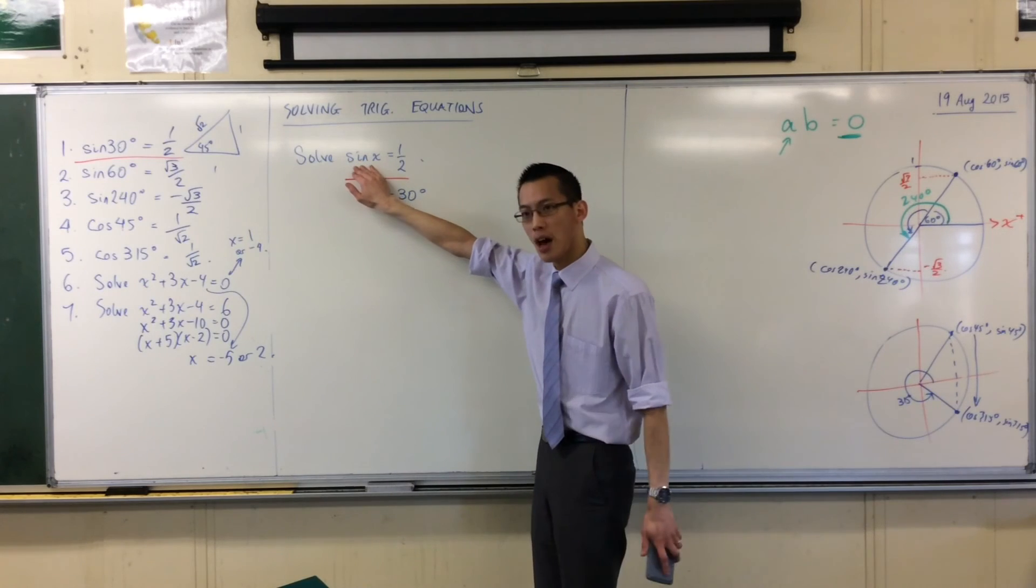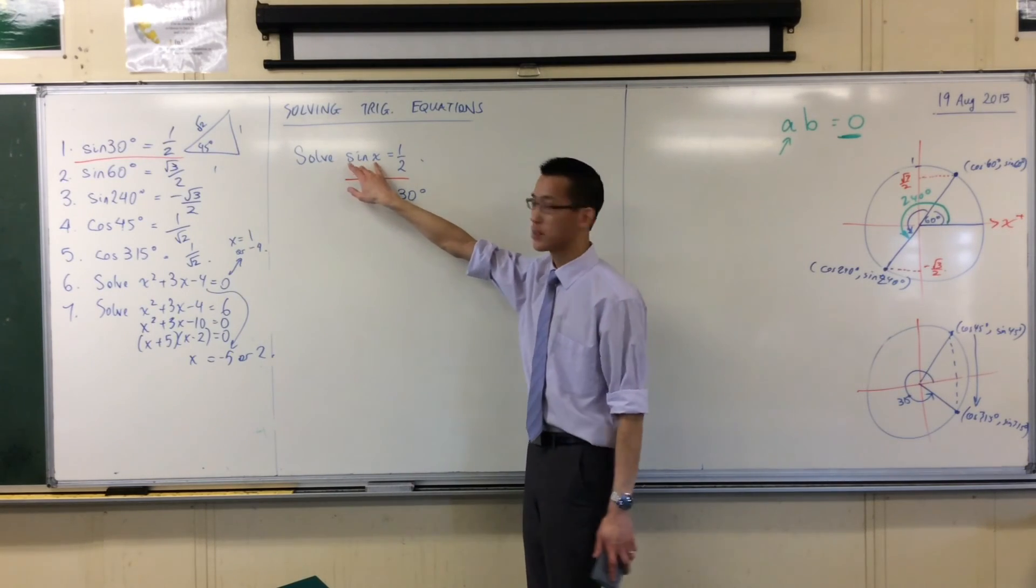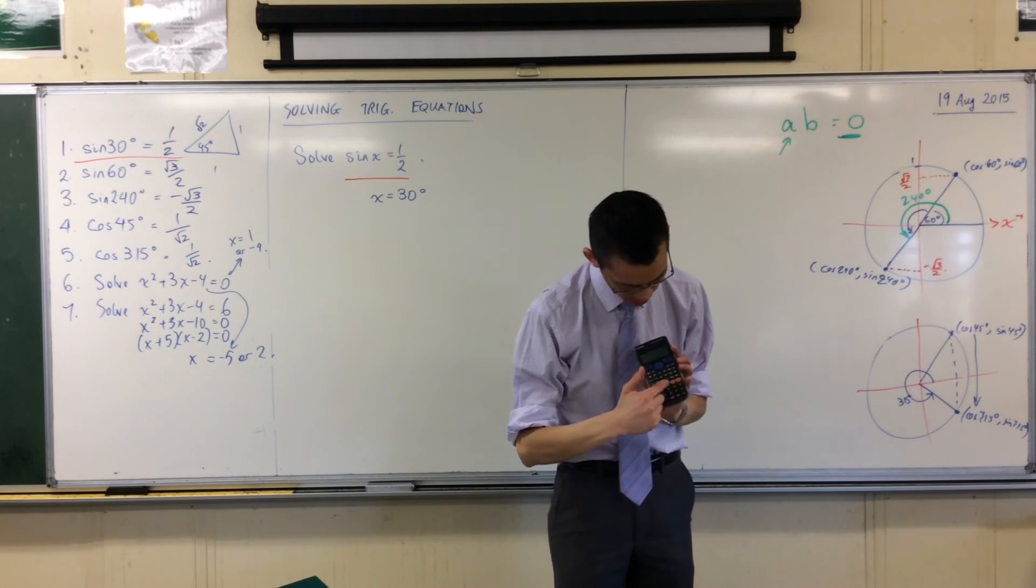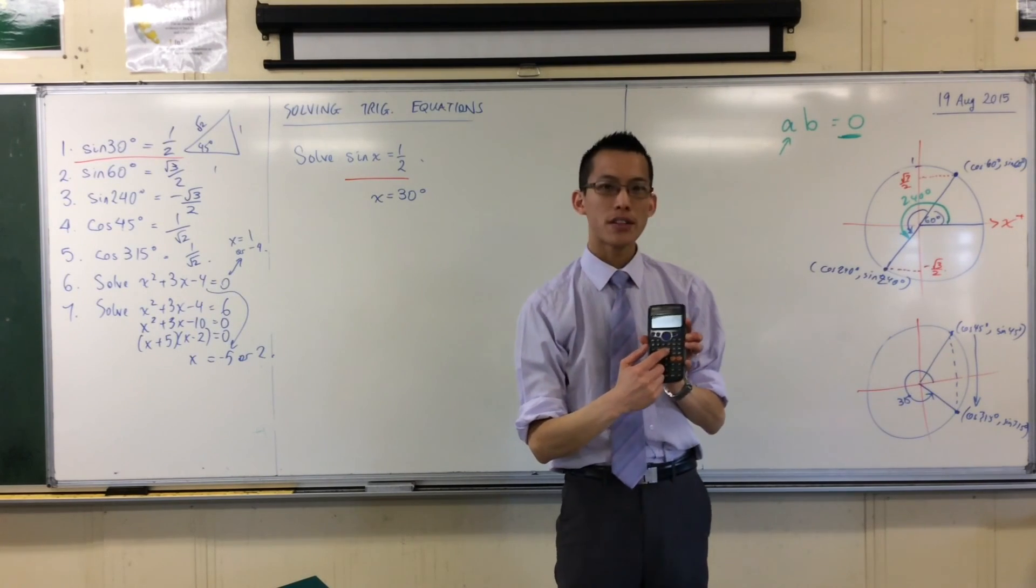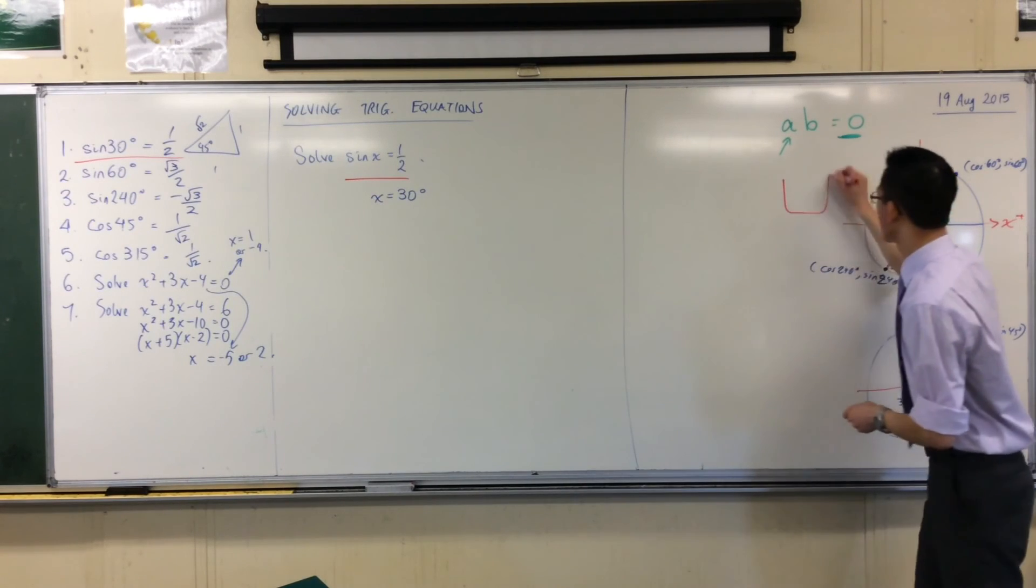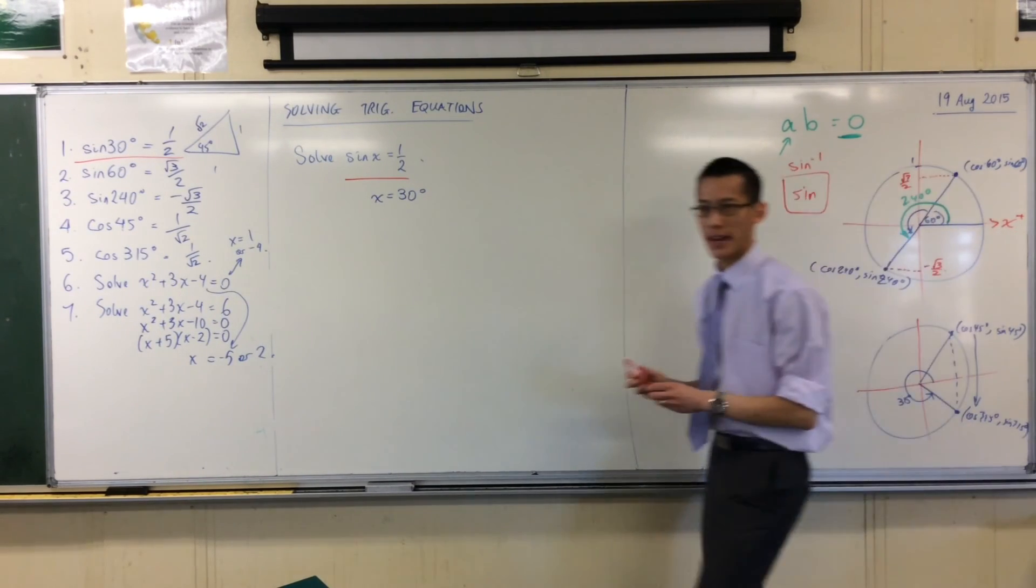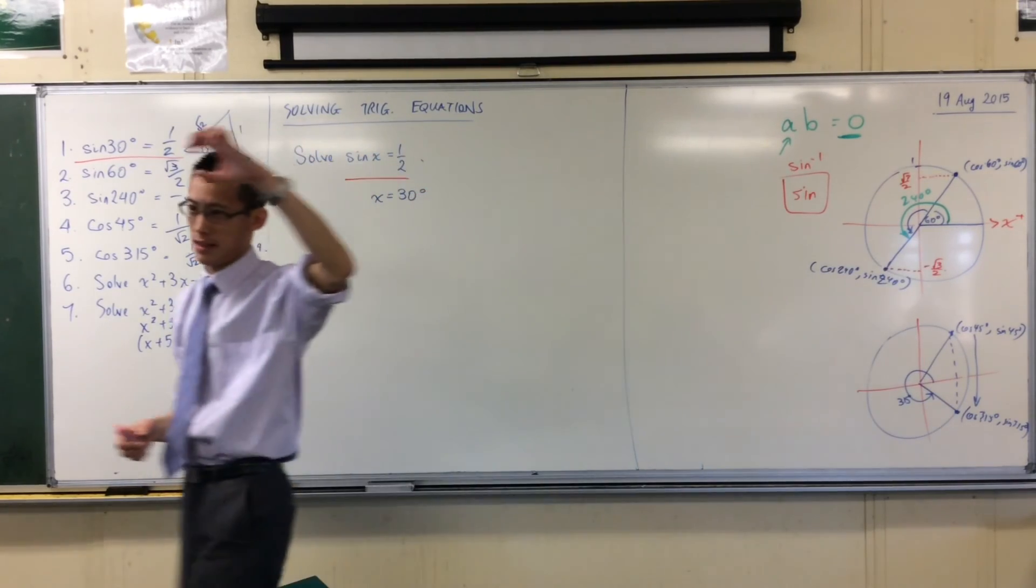And the answer is, if I want to get rid of sine, you've used this before even as early as last year. On your calculator above the sine button, where is it? There it is. You've got this little thing which says, I'll even draw it for you, on the sine button, right above it, you've got this guy. There's a sine, there's a little minus one in the index.